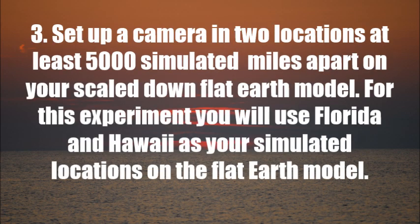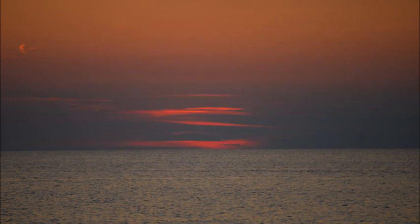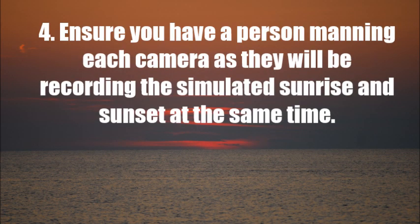Number three: place a separate camera in two locations at least 5,000 miles apart on your scaled down flat earth model. For this experiment you will use Florida and Hawaii as your locations. Number four: ensure you have a person manning each camera, as they will be recording the simulated sunrise and sunset at the same time.